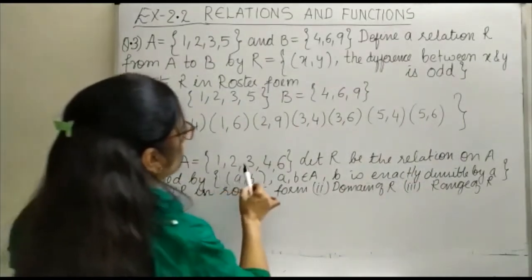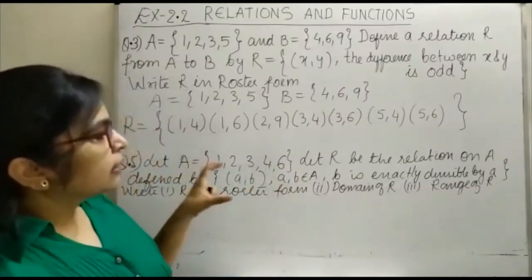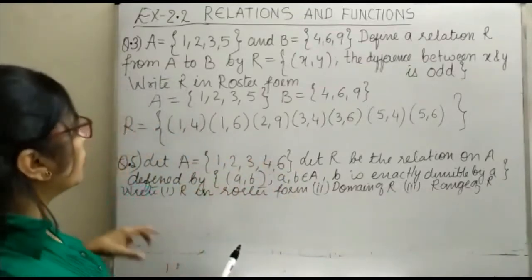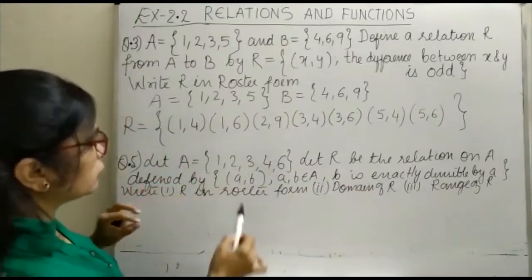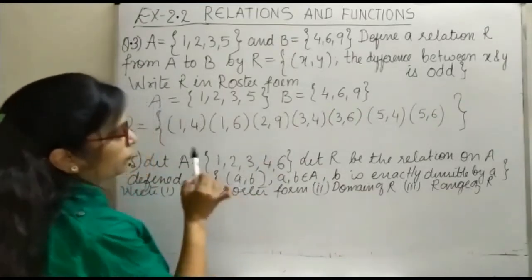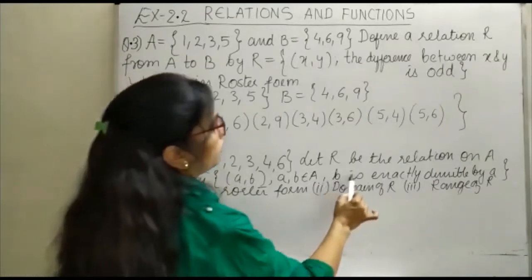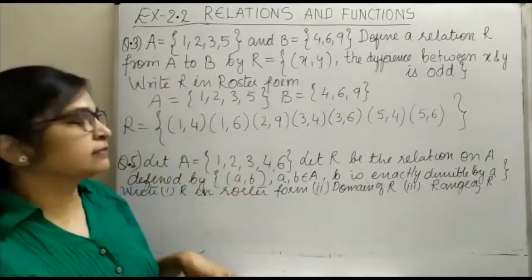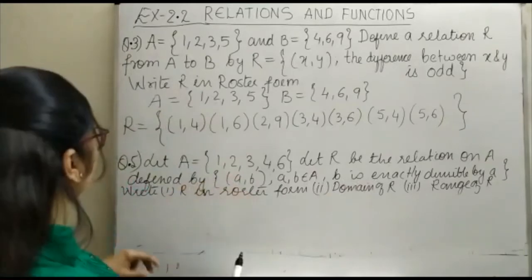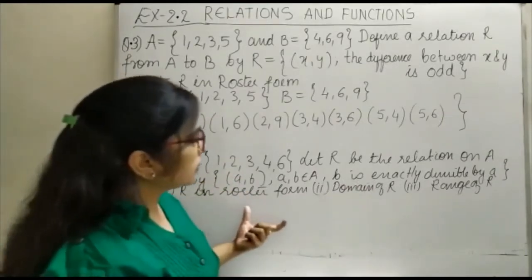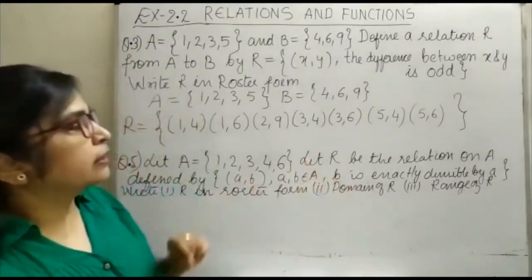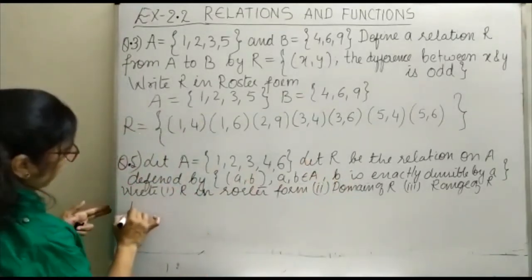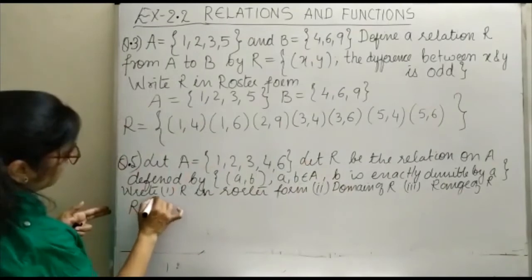Question number 5: A is given as {1, 2, 3, 4, 6}. Let R be the relation on A. You have to take ordered pairs where the second element is exactly divisible by the first, or in other words, a divides b. Then you have to write it in roster form, find the domain, and find the range. First of all, we will write R in roster form.